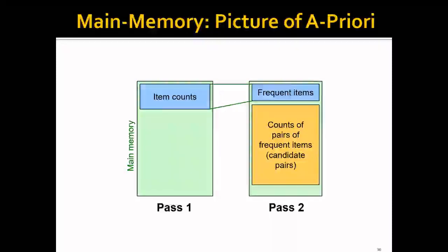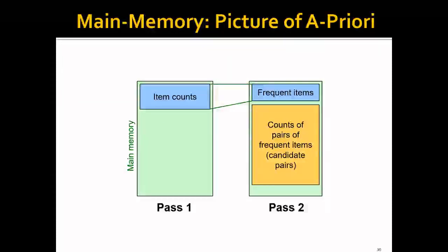And this picture illustrates the usage of memory in both passes. Let's say the green block is actually all the memory that's available to you. And in the first pass, it will count each individual item and basically maintain a table here. And in the second pass, you will only keep the frequent items. So it's actually smaller than this one. And then you will count all the pairs of frequent items and you will maintain another table here. And these are called the candidate pairs.